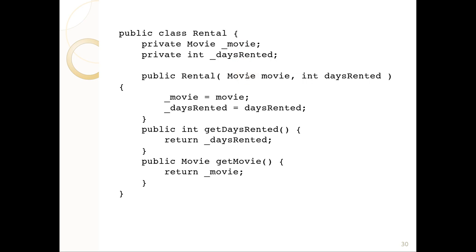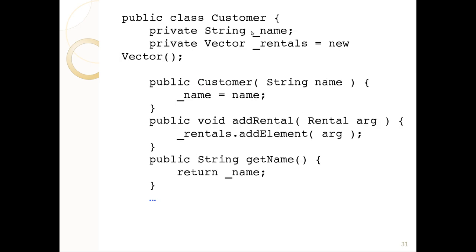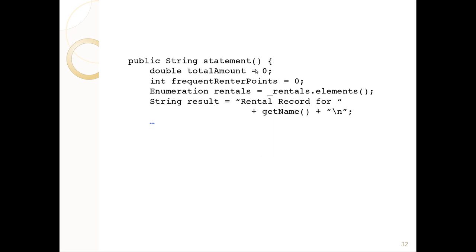A rental has a movie and days rented — we return those. This underscore style is old Java convention indicating private fields, now also used in Python. The customer has a name and a rentals vector — a synchronized ArrayList. In old Java style, we don't declare it as a vector of rentals, but it will be. We initialize customer with a name and can add rentals. To make a statement, we track total amount and total frequent renter points, then enumerate all rentals, building up a result string starting with a rental record for the customer's name.